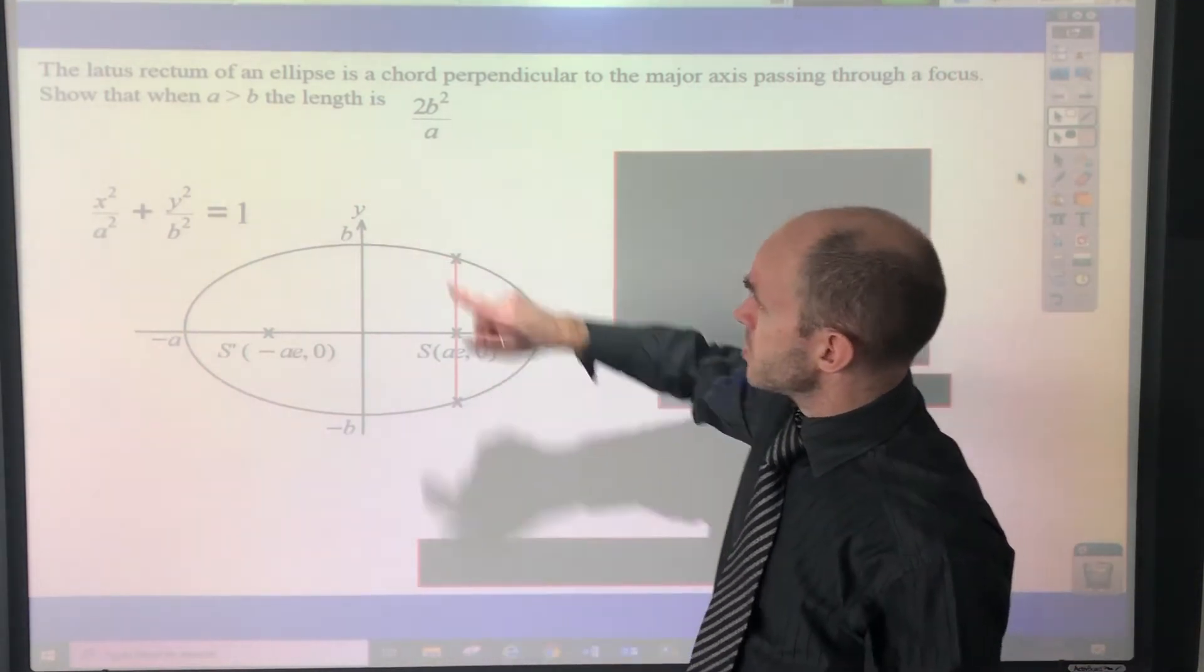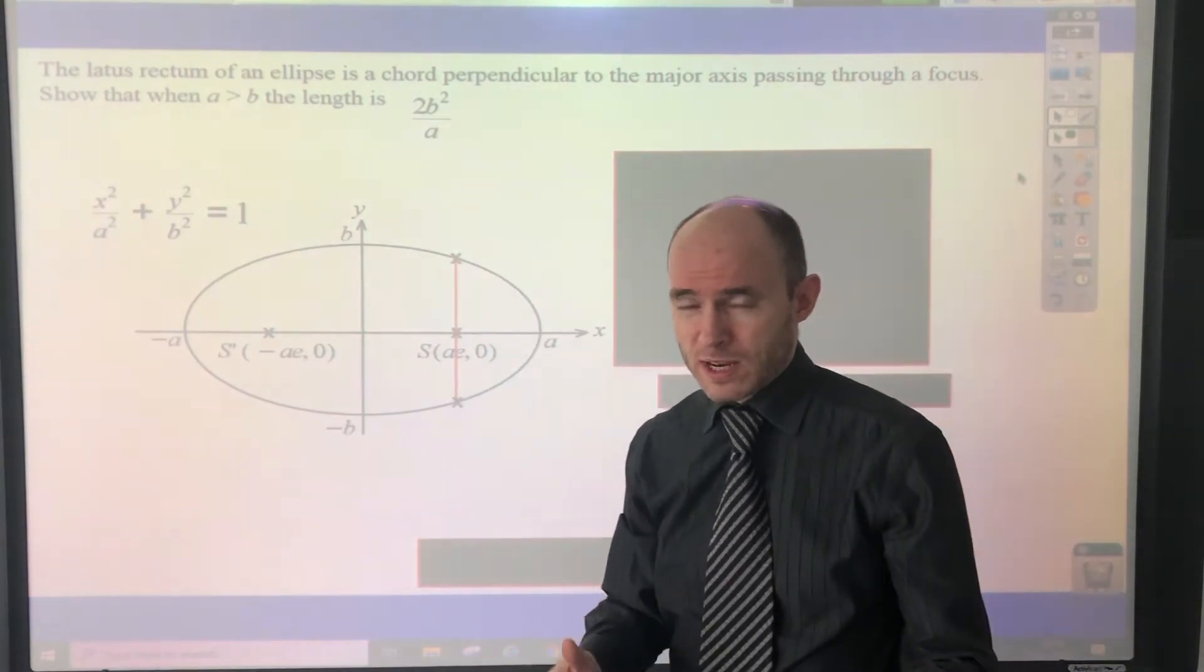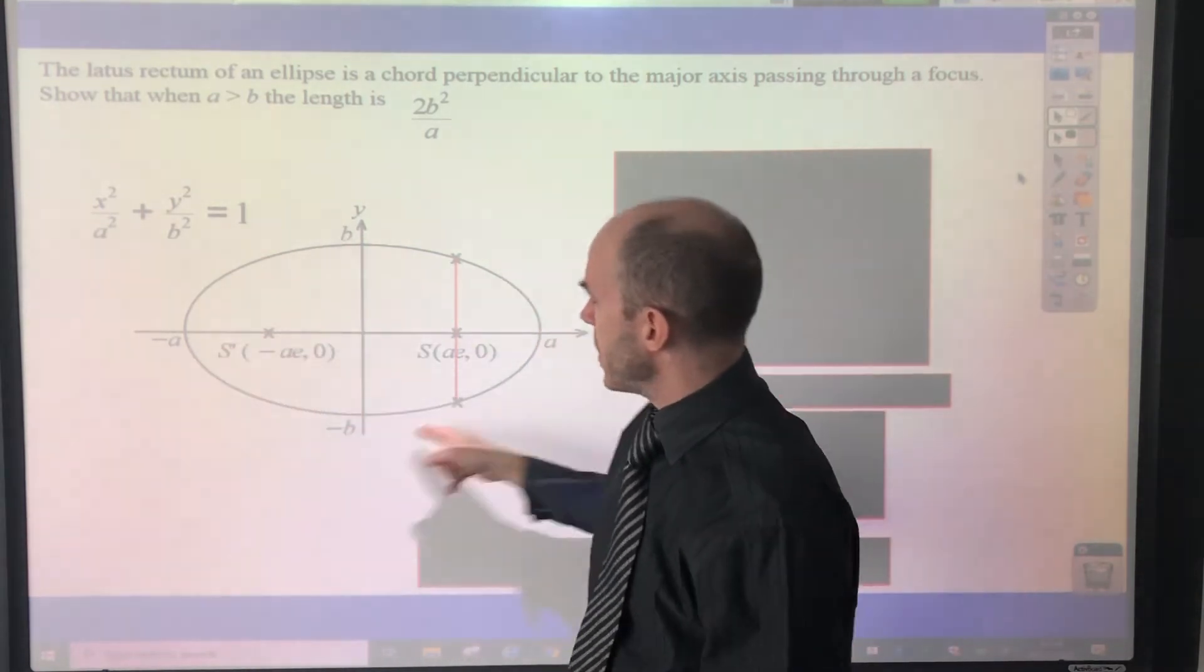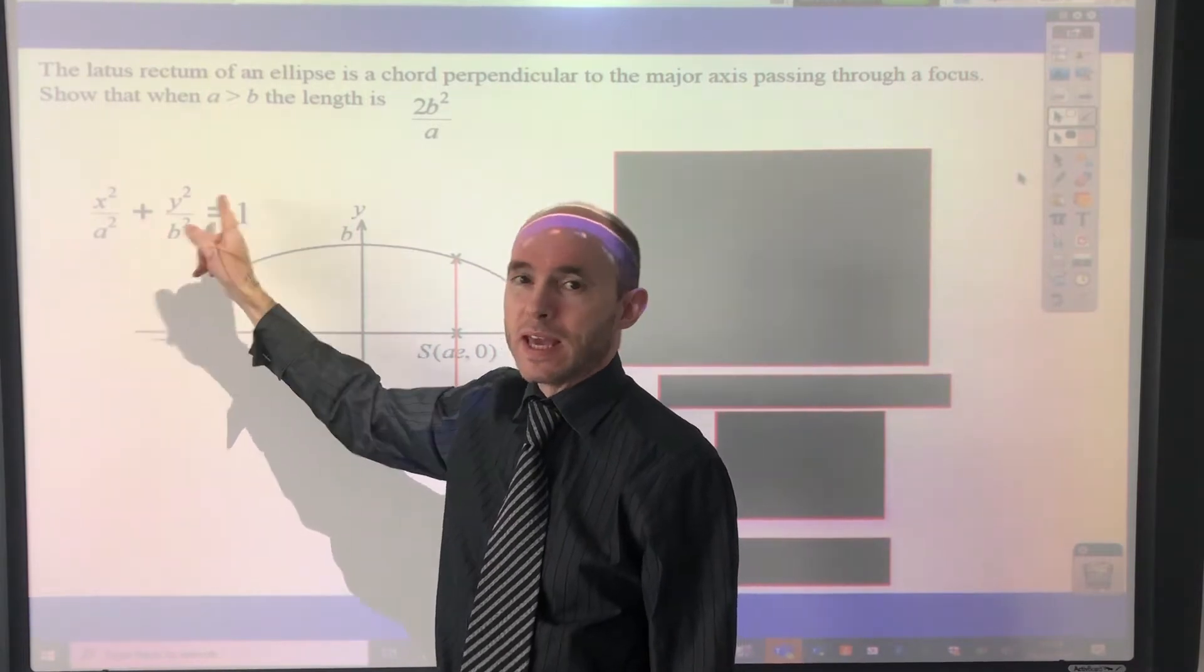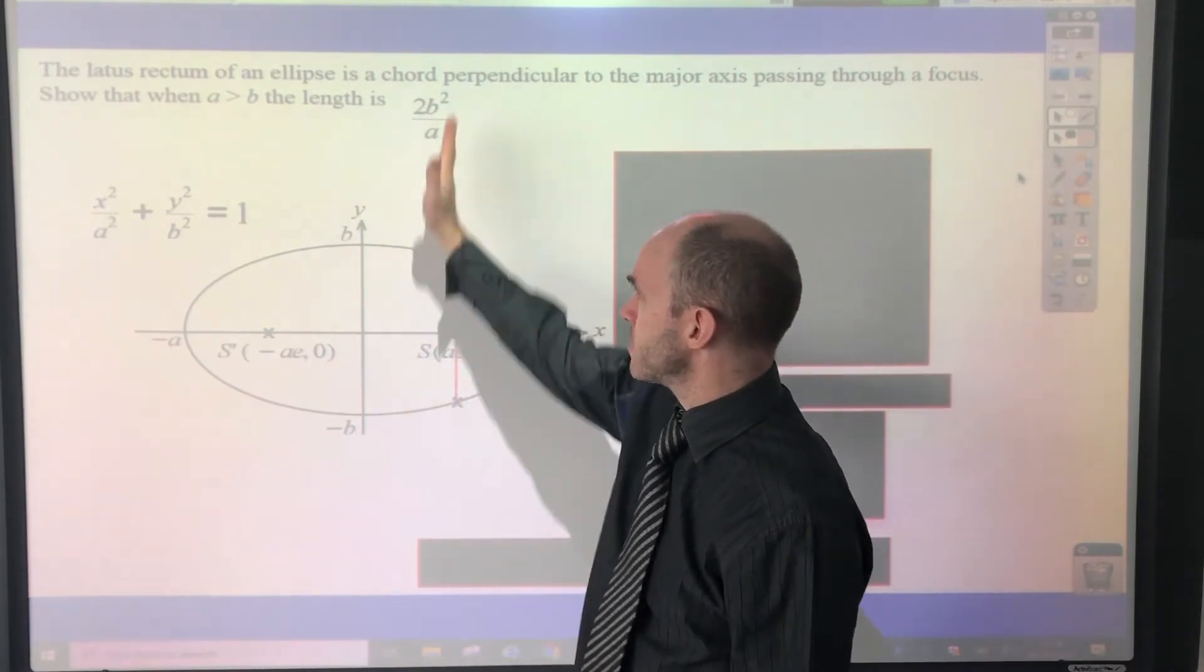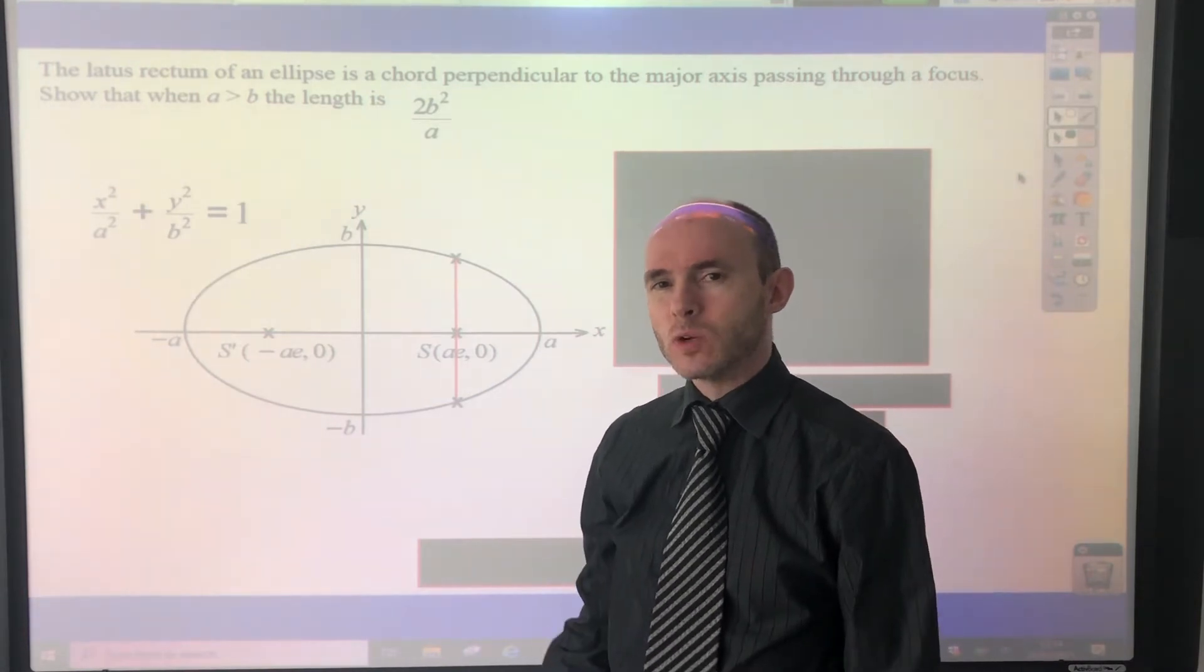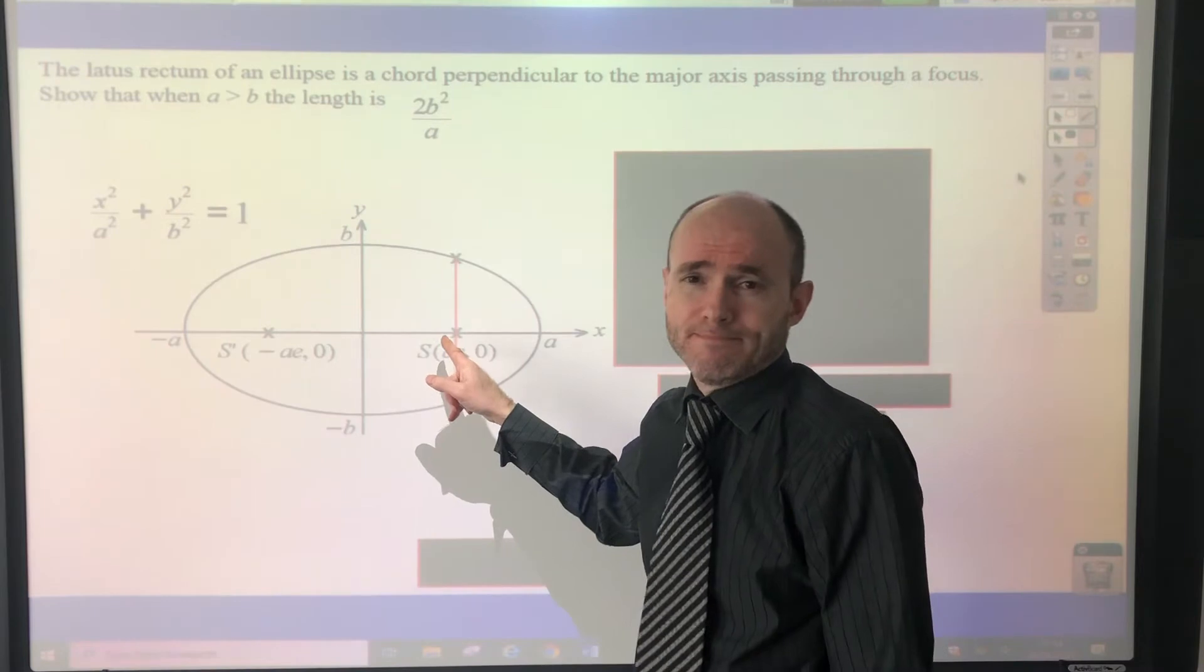What we need to do is show the length is 2b squared over a. It's quite straightforward, really. It's more like a simultaneous equations problem. We've got on the one hand, the equation of the ellipse is this: x squared over a squared plus y squared over b squared equals one. On the other hand, we can work out the equation of this straight line. Obviously, we just need the chord. But in terms of the whole straight line, we can see quite easily that the equation is x equals ae because it passes through x-coordinate ae in this vertical line.